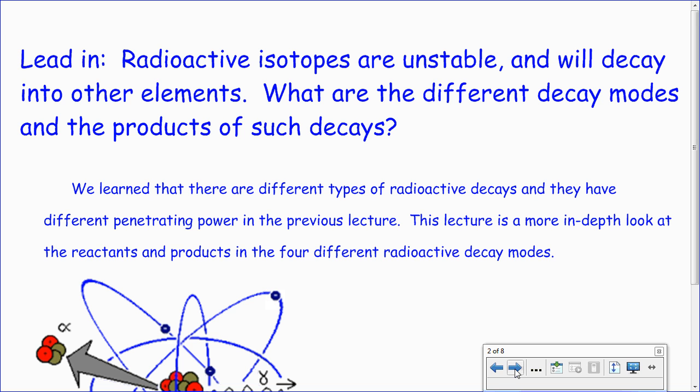The objective is to write and balance nuclear equations for different types of radioactive decay, like alpha decay, beta, gamma emission, positron emission. We are going to be writing these equations to balance for mass the entire time. Radioactive isotopes are unstable and will decay into other elements. It's called transmutation.